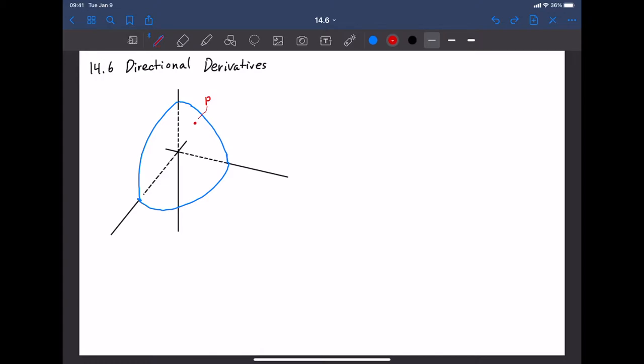We also talked about cutting with a plane parallel to the XZ plane. The curve maybe looks something like that. And then we would have a tangent line like this. And that would be the tangent line F sub—well, this time the Y is constant and the X is changing. So it's the slope with respect to X. Those are two kinds of directional derivatives. Those are the special directional derivatives. That's what we talked about in 14.3.